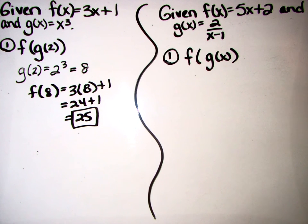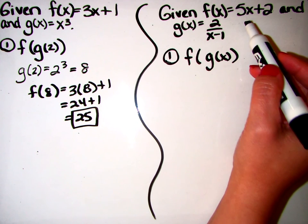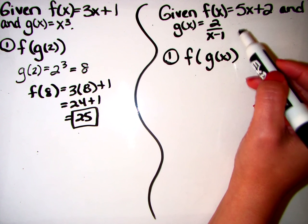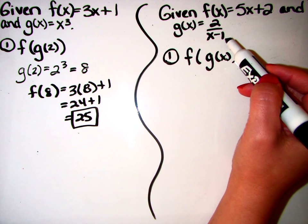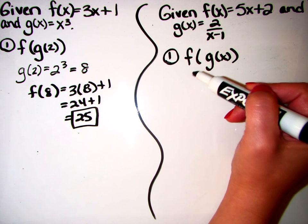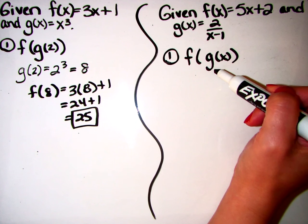Another example. Here we have f of x equals 5x plus 2 and we have 2 over x minus 1 for g of x. They want us to do f of g of x.